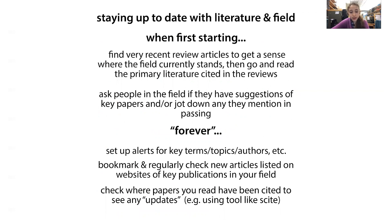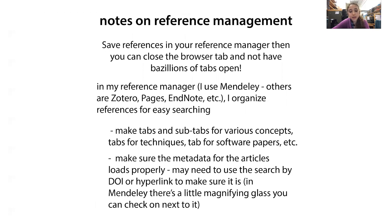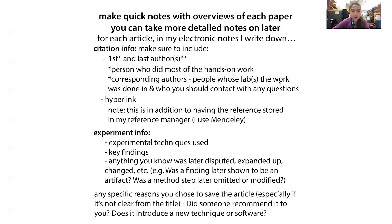So now you've identified papers that you want to read and you've got them in your reference manager software. Another thing when you're adding them is that I like to make quick notes with overviews of each paper — just when I add it to the reference manager, saying in one sentence why I added this paper. Why did I choose to save the article, especially if it's not clear from the title? Did someone recommend it? Did it introduce a new technique or software? Did you find it in a different paper? Was there a specific context that made you think 'I really need to read this paper'?